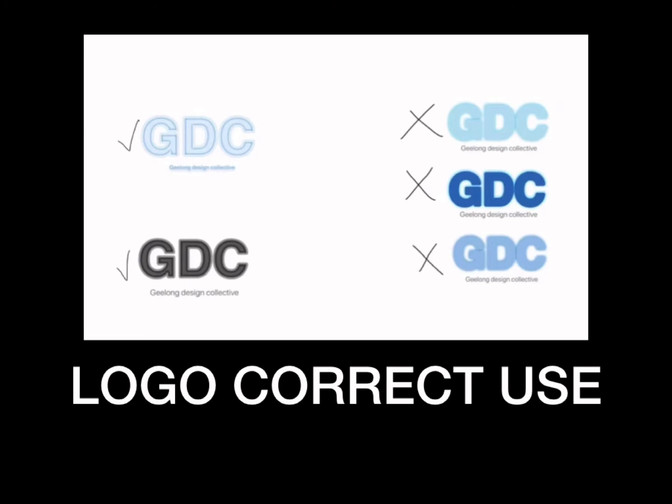About correct logo use — the correct use of a logo is very important for a company to maintain a consistent brand tone. The logo cannot be changed at will, as that is not in line with the brand personality. Correct logo use also brings a sense of trust to the audience. For example, you cannot use the logo alone without the tagline, change the color of the logo at will, or change the company logo at will.